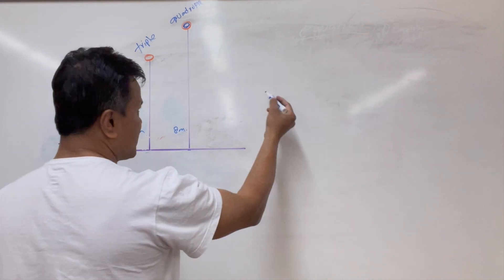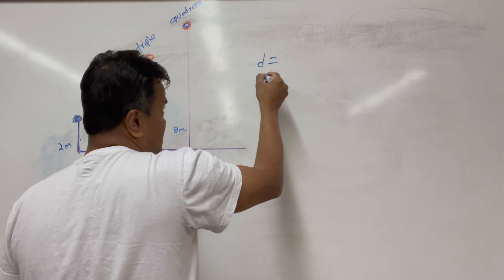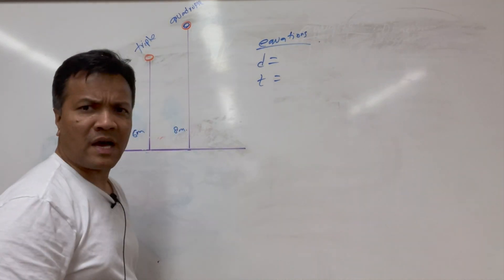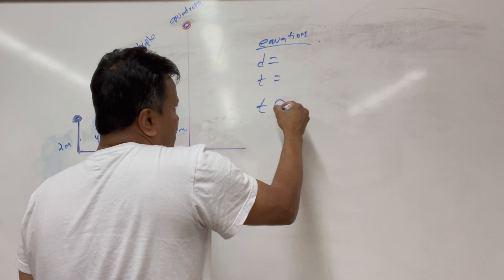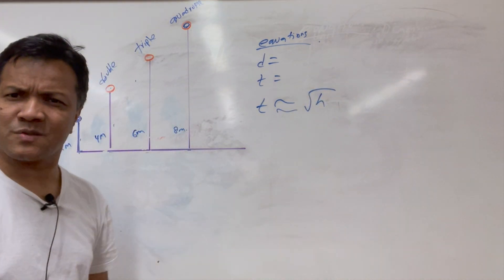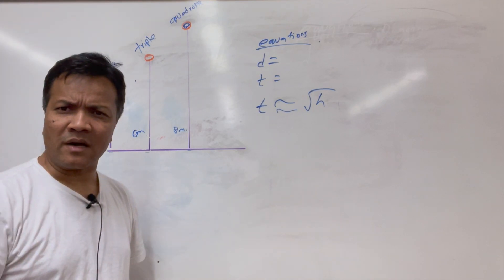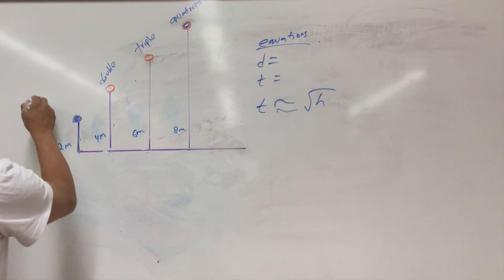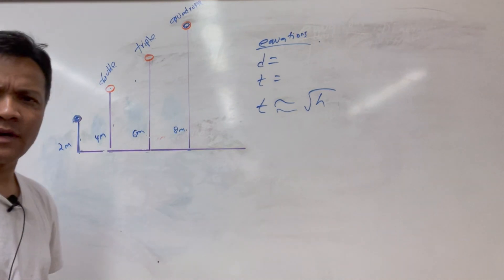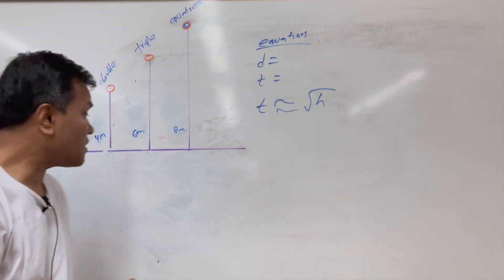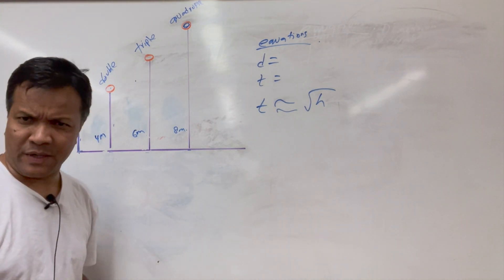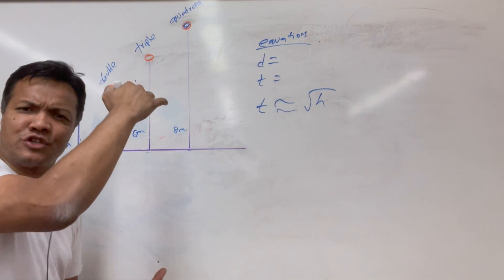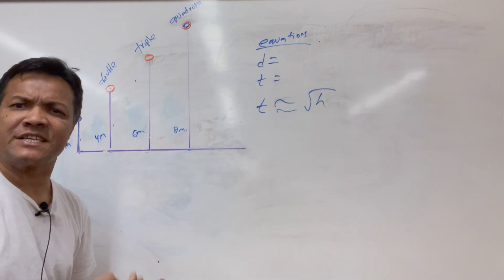Why is this important? Scientists, when they had to discover the equation for distance and time, had to start with a hypothesis. Our hypothesis is that time is proportional to the square root of the height of a falling body. So if you drop a ball from 2 meters above the ground and it takes 10 seconds, what height do you need to drop it from so that it takes double the time?